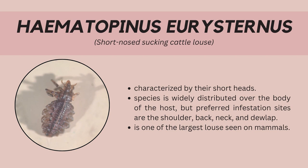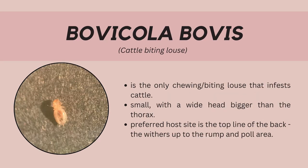The sample used for this activity was derived from a carabao suffering from pediculosis at the Philippine Carabao Center. The second louse is Bovicola bovis, or the cattle biting louse. It is the only species of chewing louse that infests cattle. The preferred site for this louse is the top line of the back, especially the withers area, from which it spreads to the rump and poll area. This louse was obtained from the same carabao at the Philippine Carabao Center, along with the first louse, Haematopinus eurysternus.